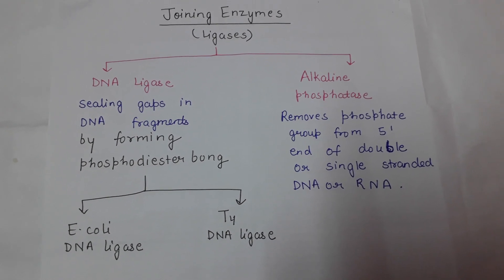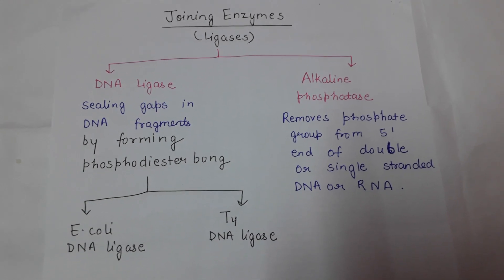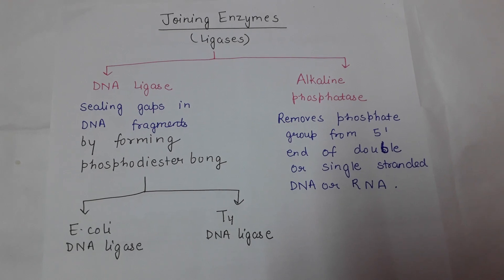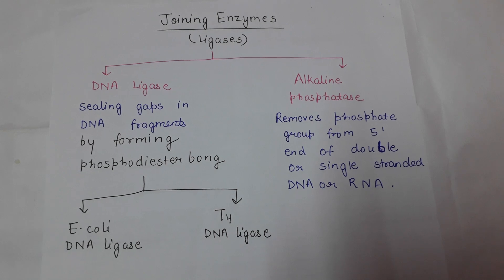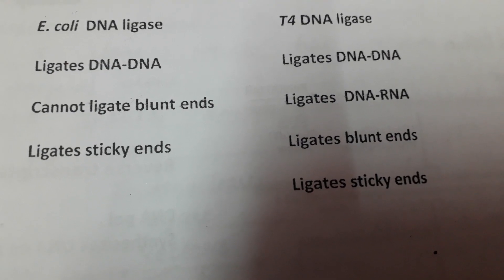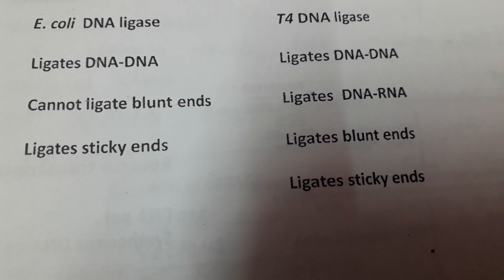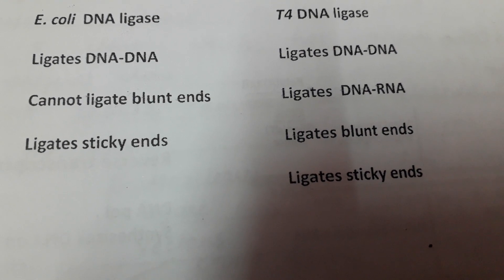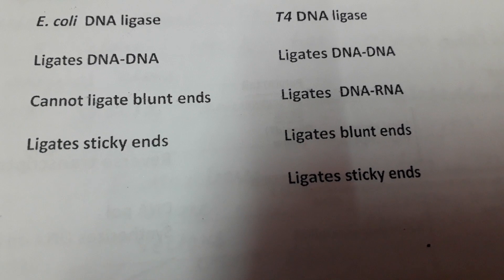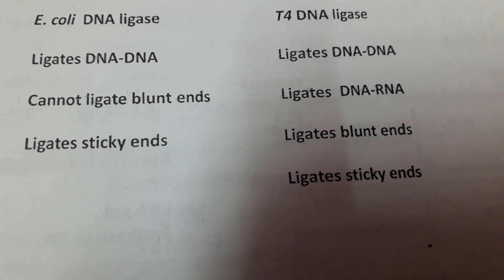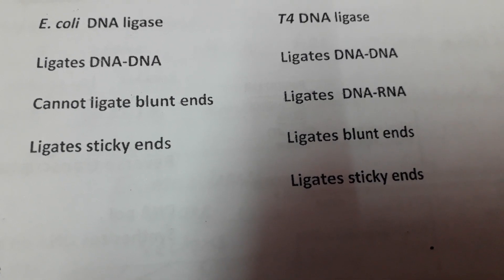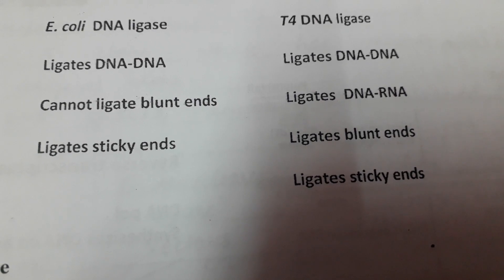Another category is joining enzymes or ligases, also called molecular glue. There are two types: DNA ligase and alkaline phosphatase. DNA ligase seals gaps in DNA fragments by forming phosphodiester bonds. E. coli DNA ligase can ligate DNA-to-DNA and ligates sticky ends but cannot ligate blunt ends. T4 DNA ligase, obtained from T4 bacteriophage, can ligate DNA-to-DNA, DNA-to-RNA, and can ligate both blunt ends and sticky ends — making it preferable over E. coli DNA ligase.